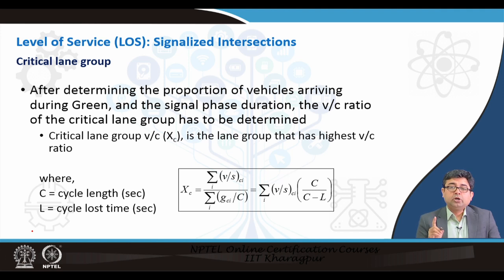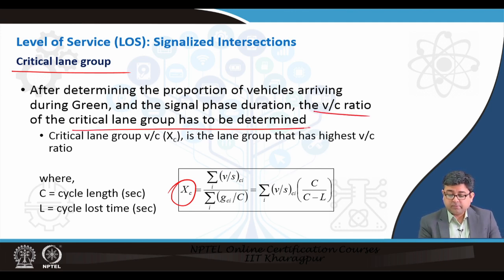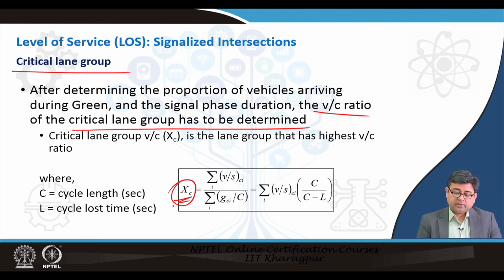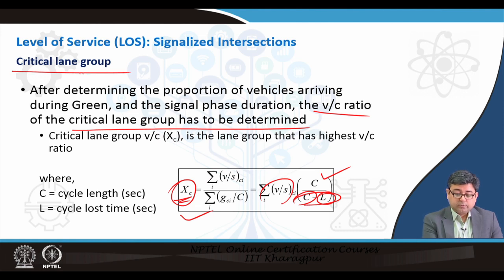Once you know the adjusted saturation flow rate, you determine the critical lane group — the lane group with the maximum V/C ratio, which requires the maximum green time to pass through the signal. If you take care of that critical lane group, you are able to cater to the other lane groups automatically. The V/C ratio X for any lane group is a direct derivation from the capacity equation. A saturated signal has X equal to 1, while an oversaturated signal has X greater than 1 — meaning not all approaching vehicles can cross during the green time and a queue is left over.